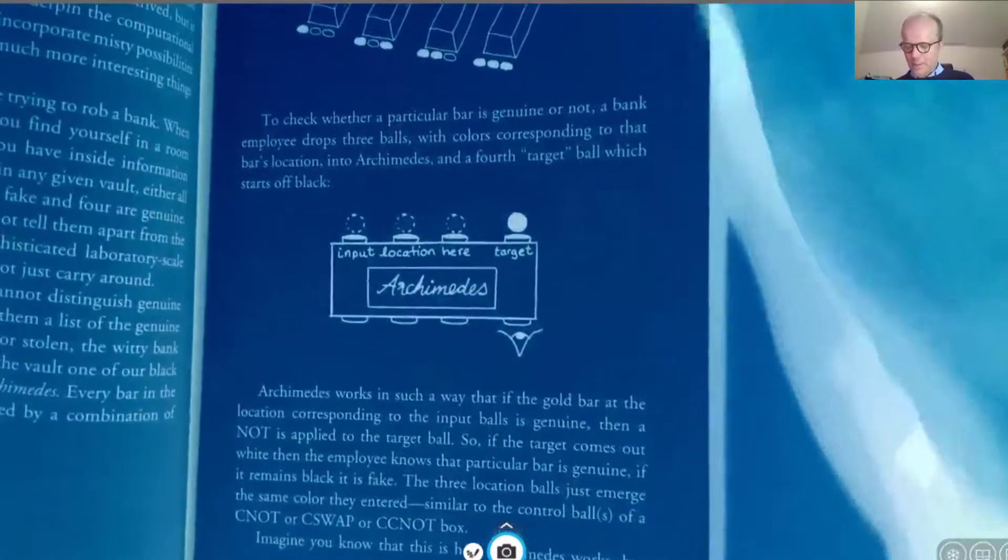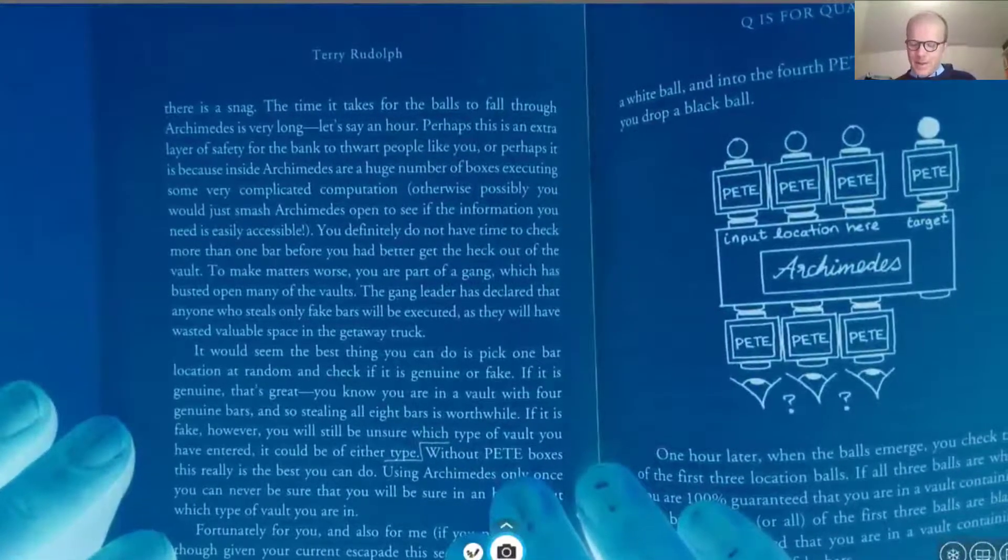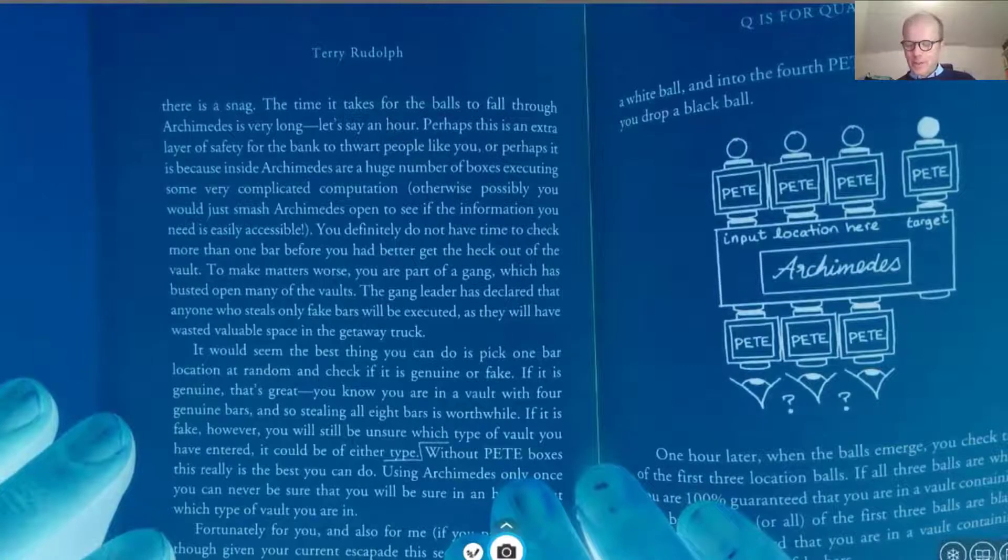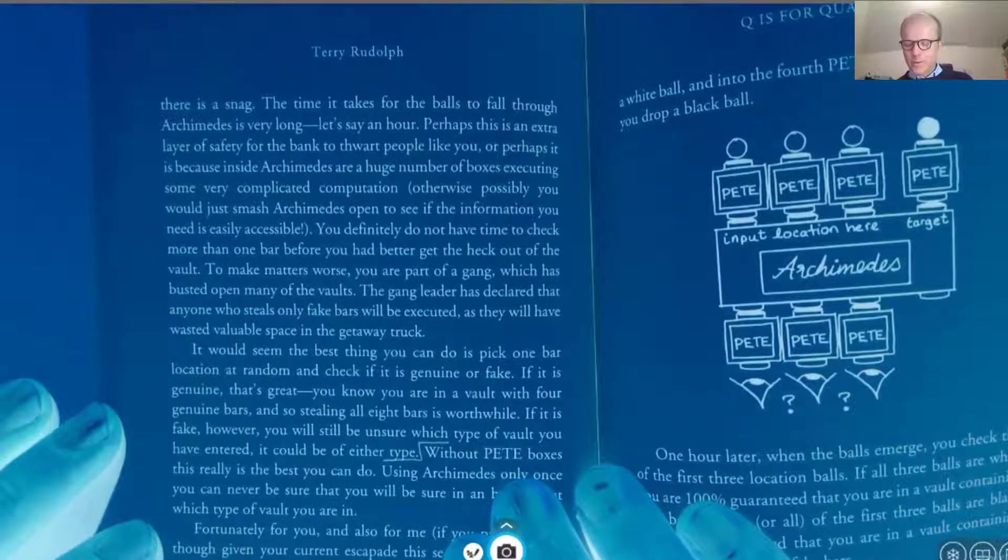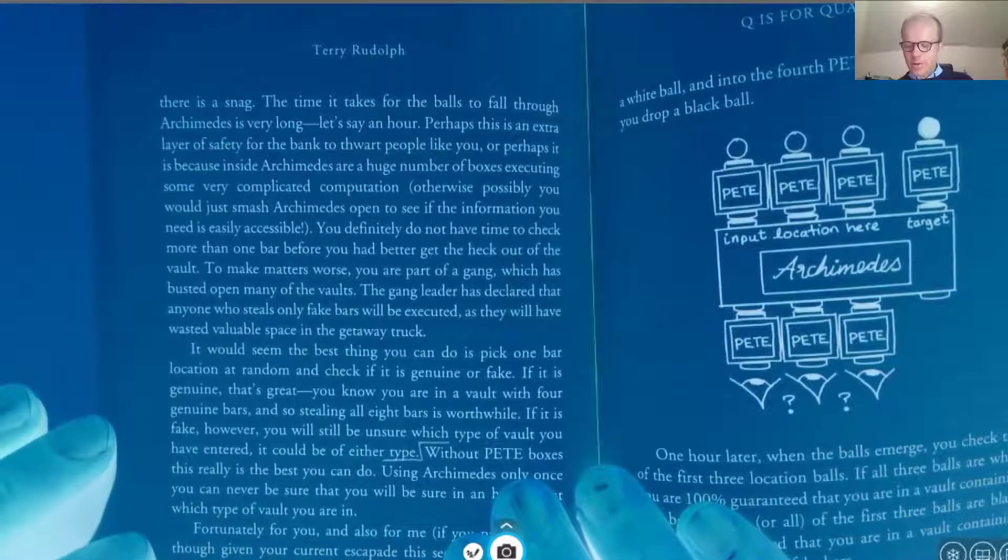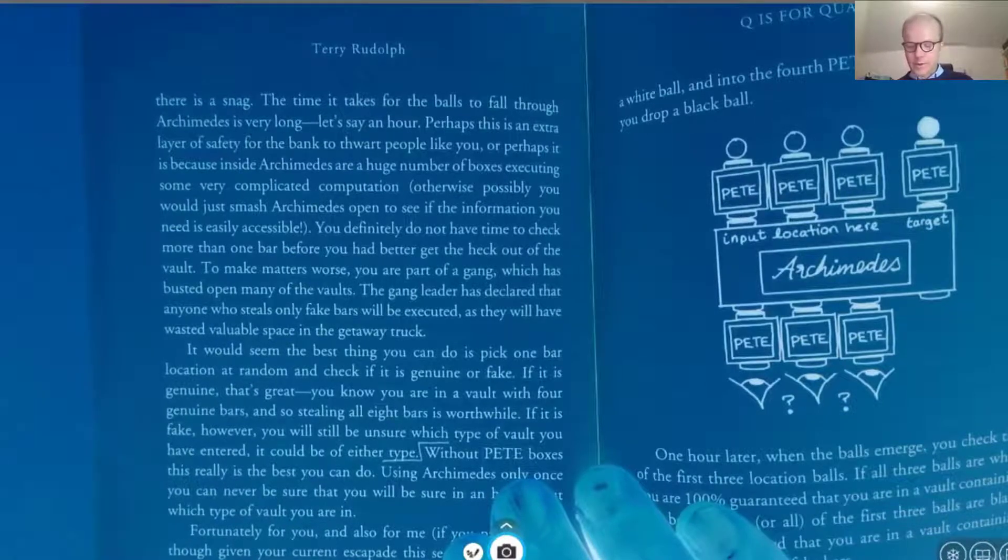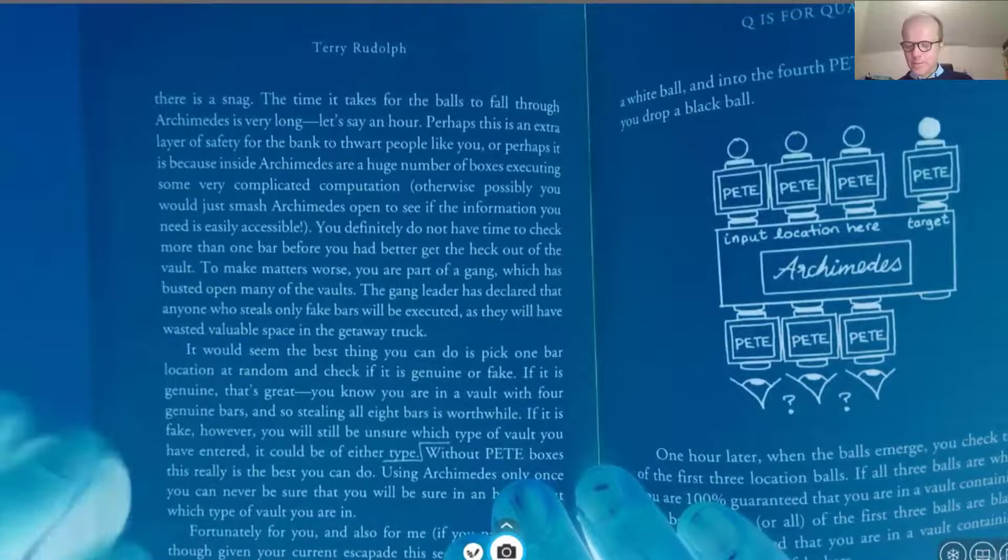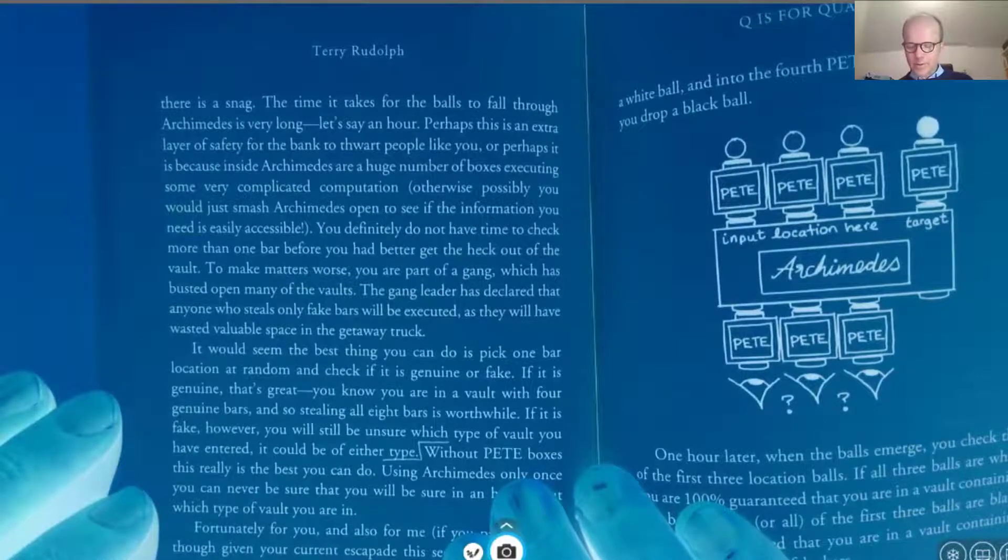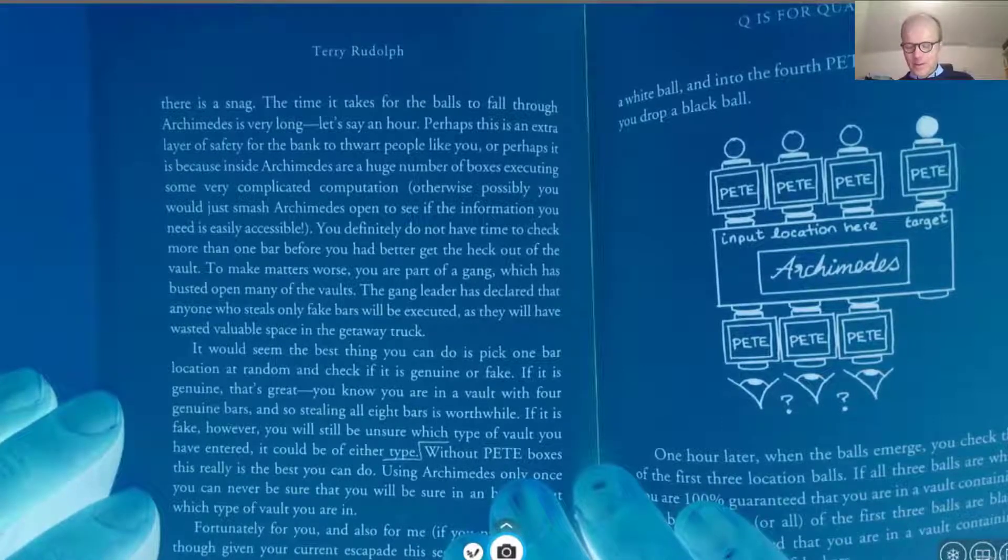Imagine you know that this is how Archimedes works, but there is a snag. The time it takes for the balls to fall through Archimedes is very long, let's say an hour. Perhaps this is an extra layer of safety for the bank to thwart people like you, or perhaps it is because inside Archimedes are a huge number of boxes executing some very complicated computation. Otherwise possibly you would just smash Archimedes open to see if the information you need is easily accessible. You definitely do not have time to check more than one bar before you had better get the heck out of the vault.